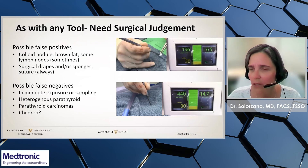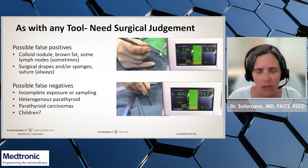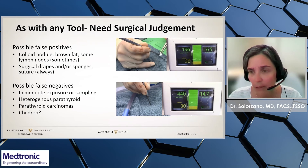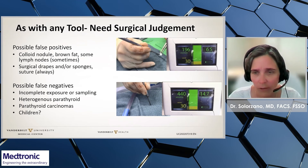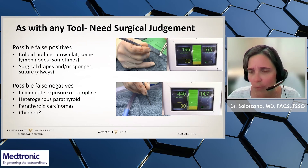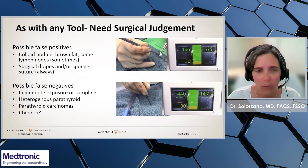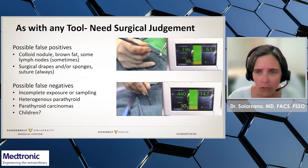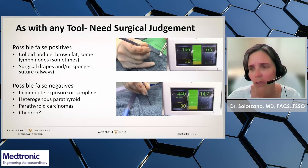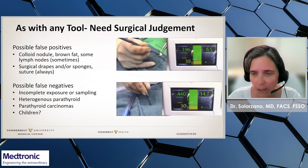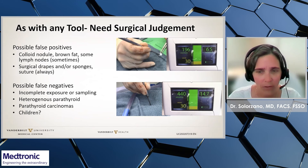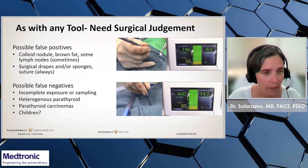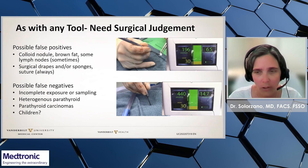As with any tool, we need surgical judgment. There are tissues in the neck that can but don't always give false signals. False positive signals can sometimes be seen with colloid nodules, brown fat, and lymph nodes. Be careful with surgical drapes, sponges, kidneys, and sutures, as they can be highly fluorescent. False negatives can be seen when the parathyroid is not exposed, is heterogeneous, or in some parathyroid carcinomas.